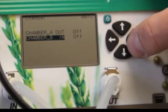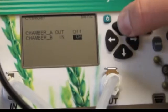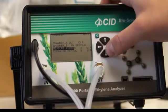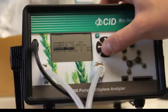Next we select chamber B in. Using the up and down arrows, we change the mode from off to special. This is where we set the time intervals for measuring and cleaning.